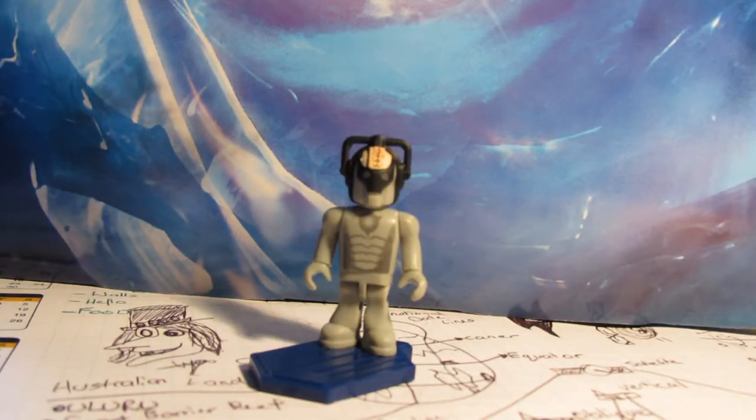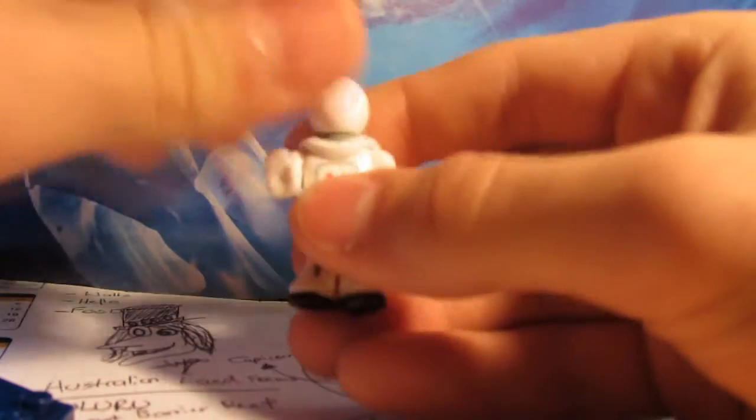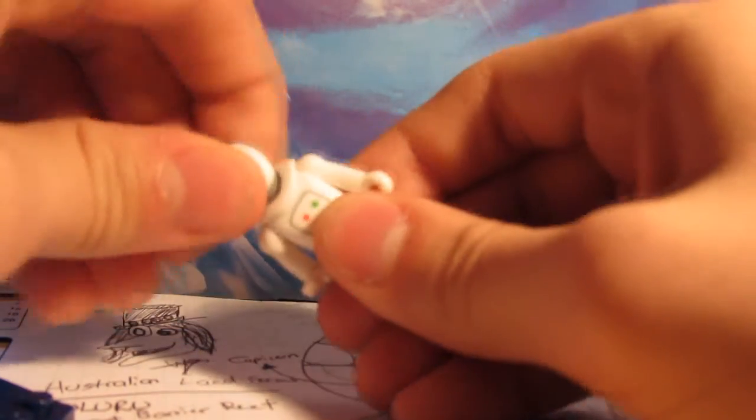And here's the Hand Bot from series 6 episode The Girl Who Waited. So what you've basically got is this is a completely new figure. Nothing on this figure has been reused. It's a great figure.